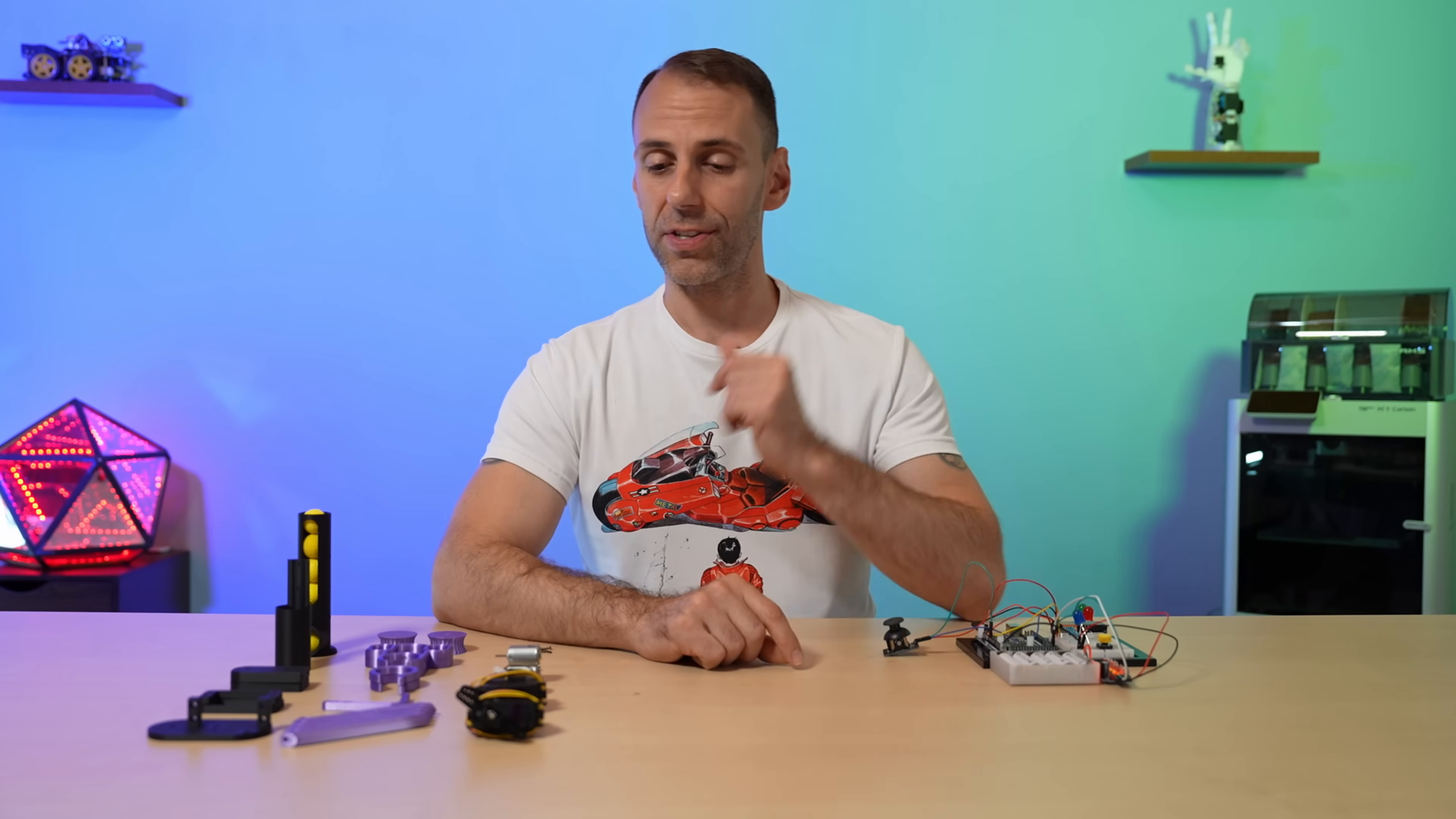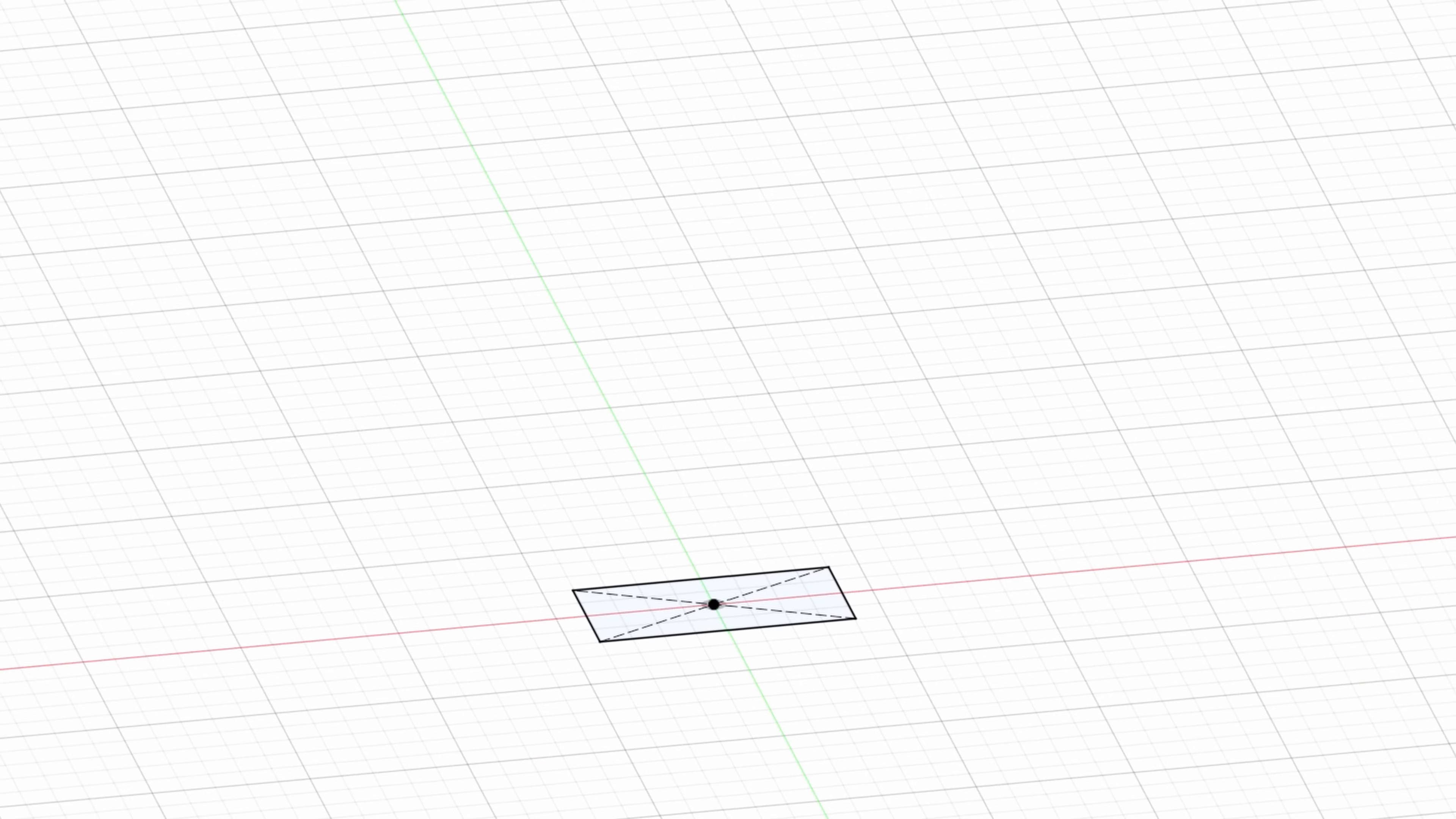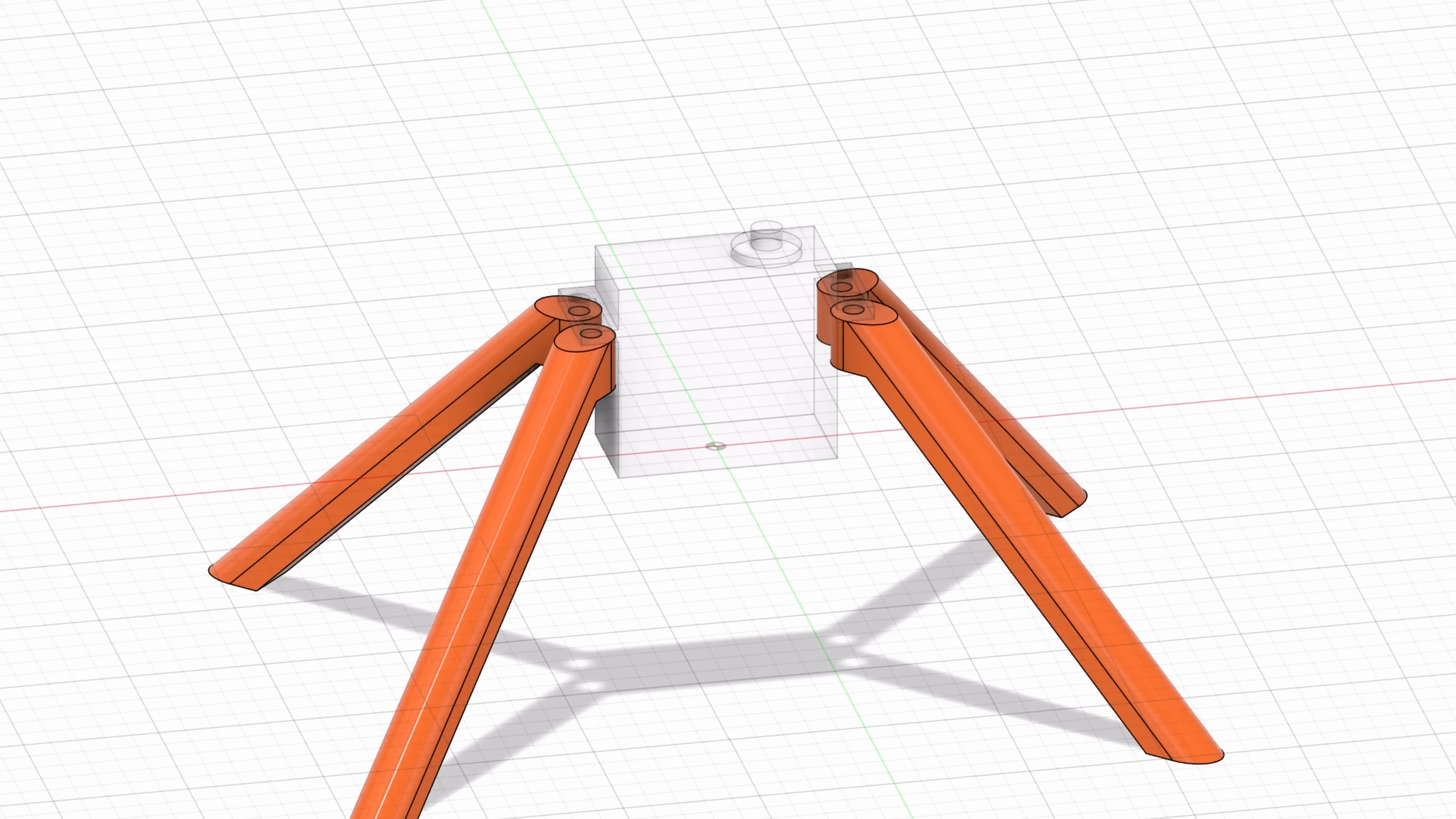When you model parts that fit around real life objects like servos, I always recommend you model the real life objects first and build all your parts around it. This ensures that you have your scale right and that things fit together as they should. Once I finished the servo, I 3D modeled legs that will become the base of our Nerf Turret.